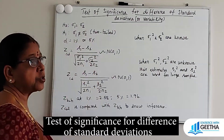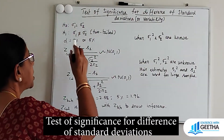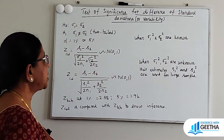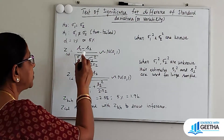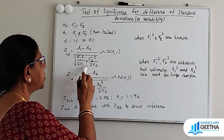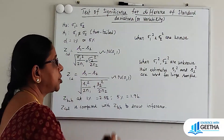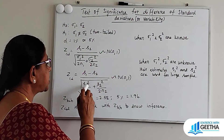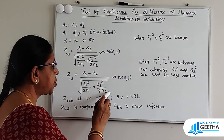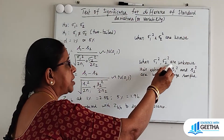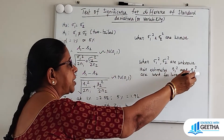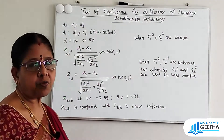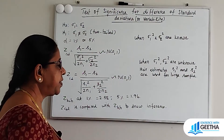Here H0: sigma1 = sigma2, that is the two population standard deviations are equal. H1: sigma1 ≠ sigma2 for a two-tailed test. Alpha is equal to either 1% or 5%. The Z calculated value is: Z = (S1 − S2) / sqrt(sigma1² / 2N1 + sigma2² / 2N2), which follows Normal(0,1) when sigma1² and sigma2² are known. Otherwise, Z = (S1 − S2) / sqrt(S1² / 2N1 + S2² / 2N2), follows Normal(0,1) when sigma1² and sigma2² are unknown — their estimates S1² and S2² are used for large samples. Z tabulated value at 1% is 2.58 and at 5% is 1.96. Z calculated is compared with the Z table value to draw an inference.